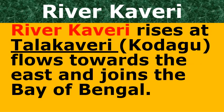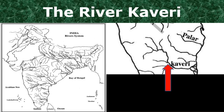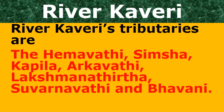Now let us know about Kaveri. Kaveri rises at Talakaveri in Kodagu district. It flows towards the east and joins the Bay of Bengal. River Kaveri has tributaries by name Hemavati, Shimsha, Kapila, Arkavati, Lakshmana Tirtha, Suvarnavati, and Bhavani.